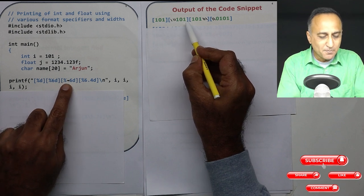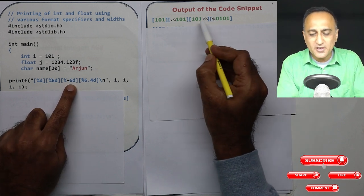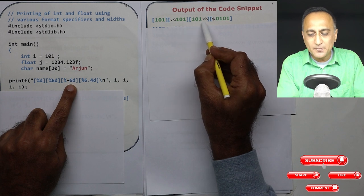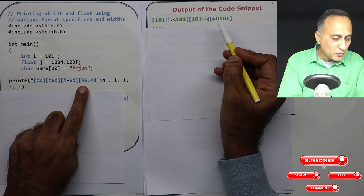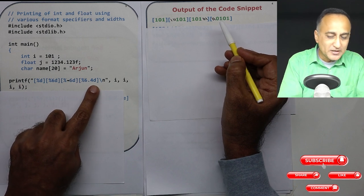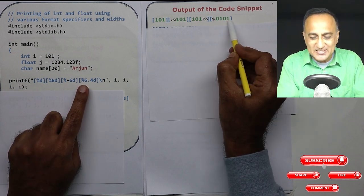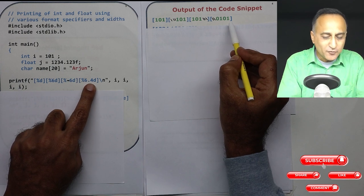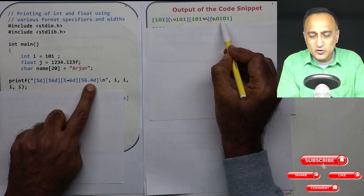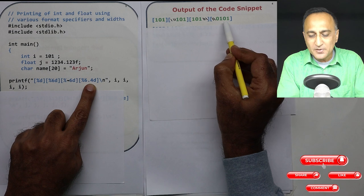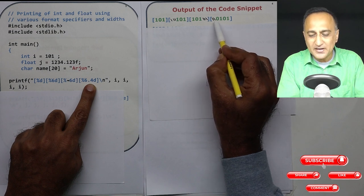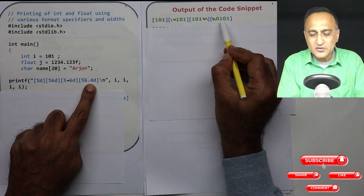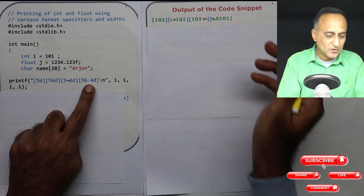Next I have done %-6d. So now what it will do is it will print 101 but leave three spaces after the last one. Here I'm doing %6.4d so total width is six but I'm saying point 4d what it does is it ensures that 101 is printed but since 101 is only three digits it pads a zero before it and gives two blanks before 0101.